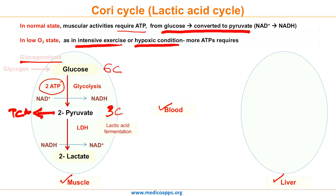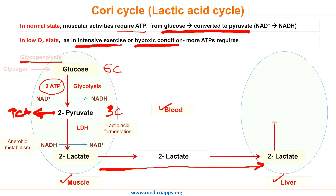Lactate or pyruvate produced in the skeletal muscle cannot synthesize glucose, due to the lack of gluconeogenesis enzymes. This lactate is then carried through the blood and transported to the liver. From here, lactate is oxidized to pyruvate, as the liver has aerobic conditions. Two molecules of pyruvate are then converted to one molecule of glucose by the process of gluconeogenesis, as the liver has the necessary enzymes.